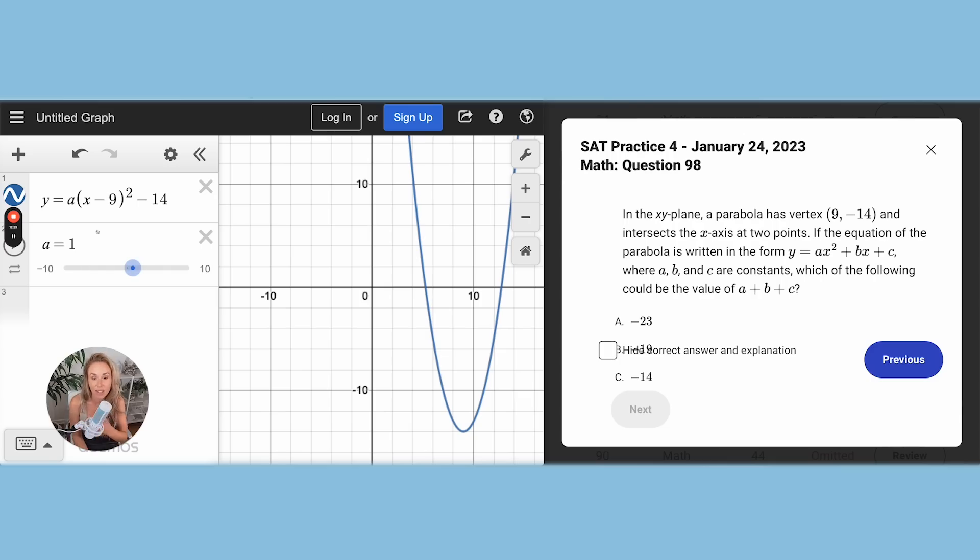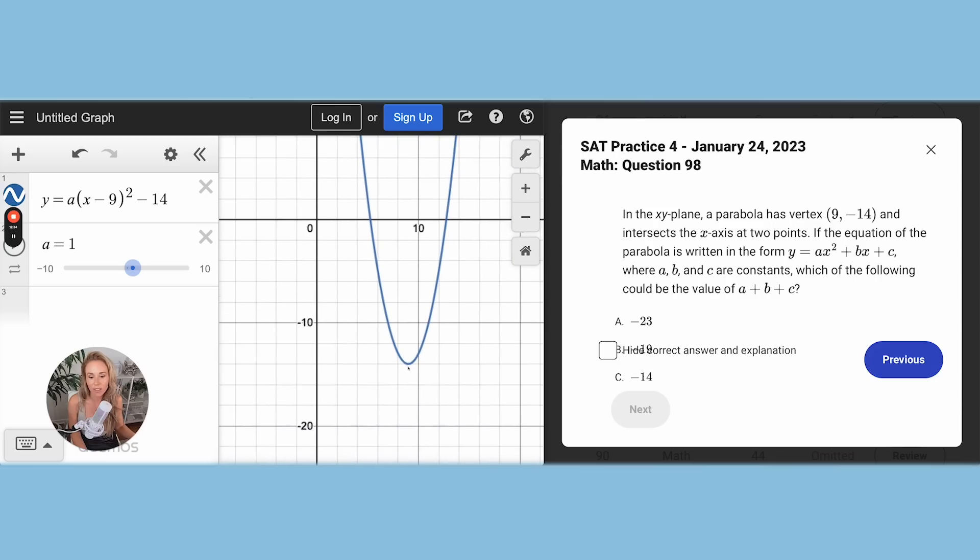Let's add in a slider and we're going to start to mess with this. Now it said that it intersects the X axis at two points. So as you guys can see, our vertex is down here. So if our vertex is in quadrant four and it's in this negative Y area, we have to have an A that's positive because this parabola has to be able to flip up to have two solutions crossing the X axis.